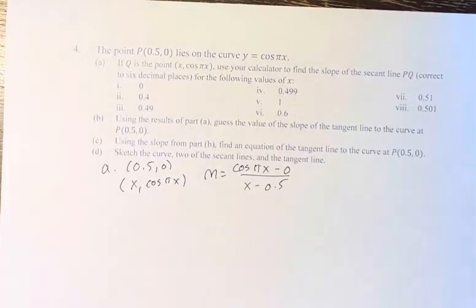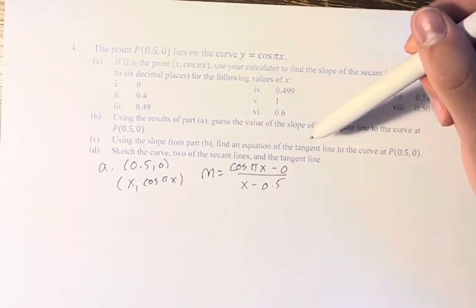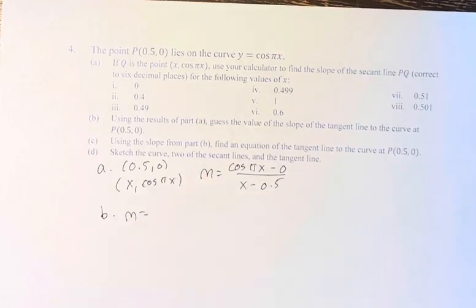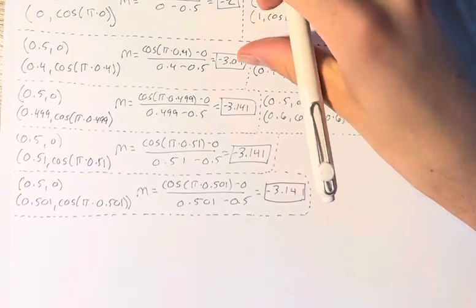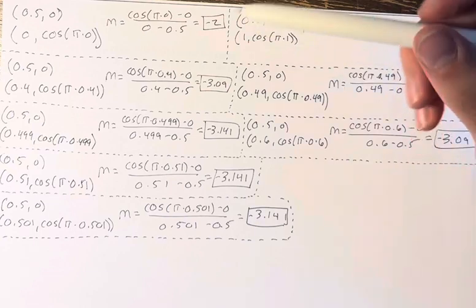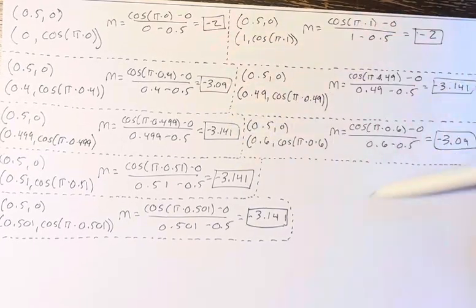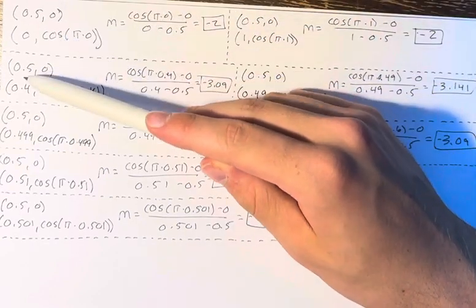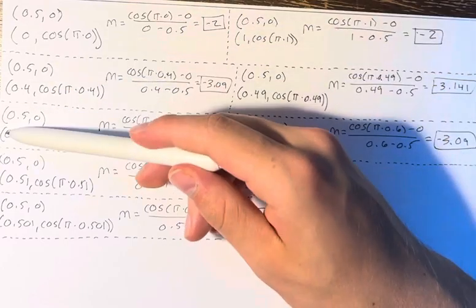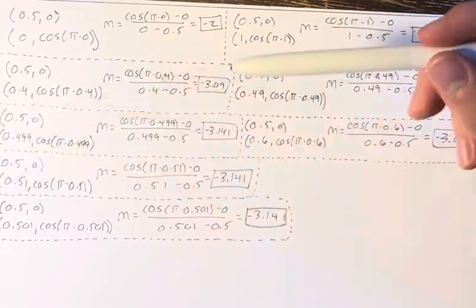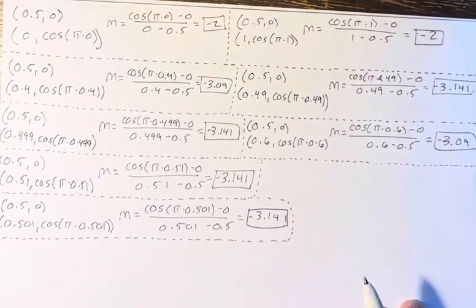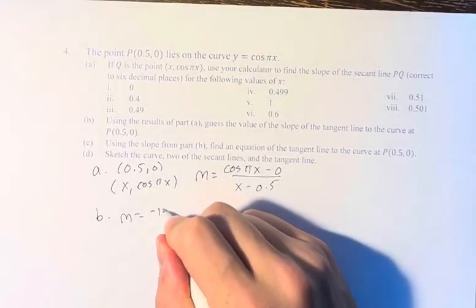But in part b, we're asked, using the results of part a, guess the value of the slope of the tangent line to the curve at this point (0.5, 0). And if we go back to the calculated points, we can see that we start out at negative 2, and then as we get closer to the actual point 0.5, as it goes from 0 to 0.4 to 0.49 to 0.499, we get closer and closer to 0.5, the value of this gets closer and closer to negative 3.14, or pi. So we guess that the slope is negative pi.